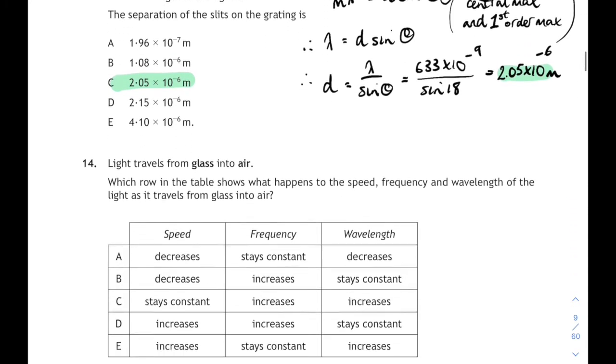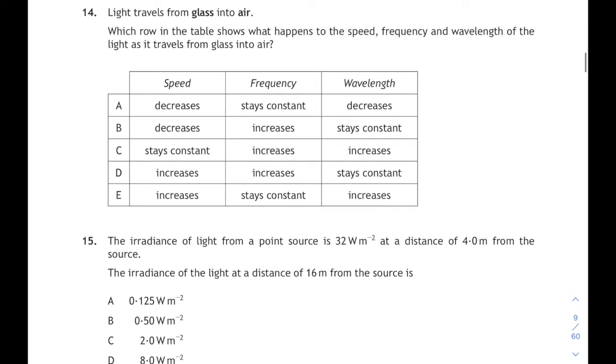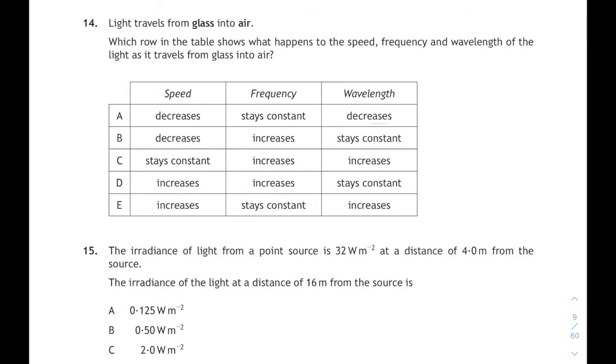Moving on, question 14. Light travels from glass into air. Be careful with this one because it's glass into air, not the usual air into glass that we're used to. When it goes from glass into air, the speed is going to return to normal, so the speed is going to increase. Frequency always stays the same. The number of waves per second always stays constant. The wavelength will increase as well when it goes from glass back out into air again. That's tricky, not quite unusual. Question 14, answer E.